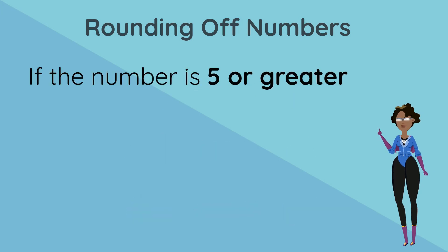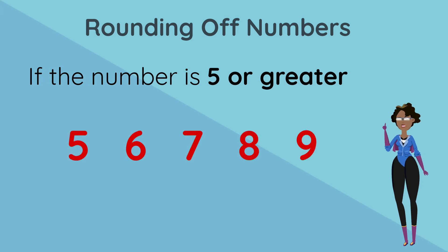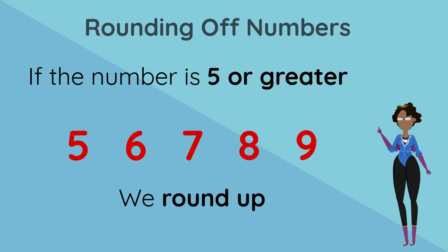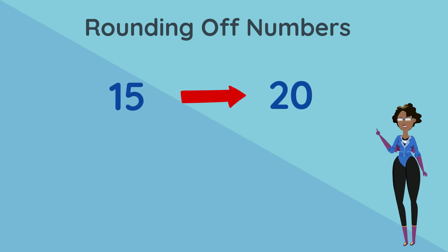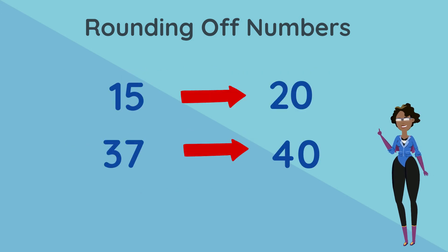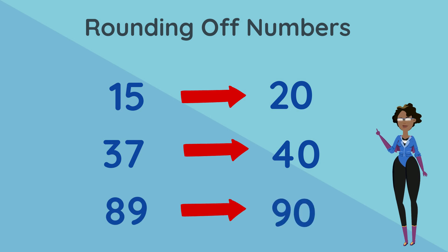If the number is 5 or greater — meaning 5, 6, 7, 8, or 9 — then we round up. For example, 15 rounds up to 20, 37 rounds up to 40, and 89 rounds up to 90.